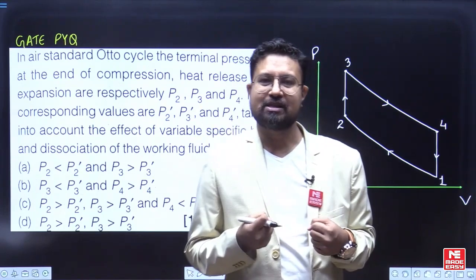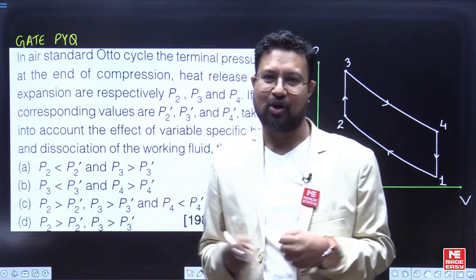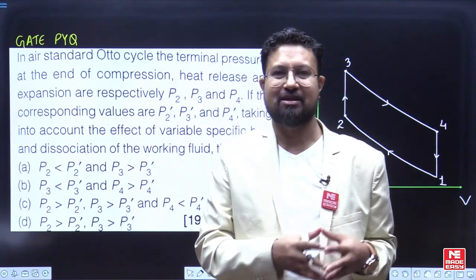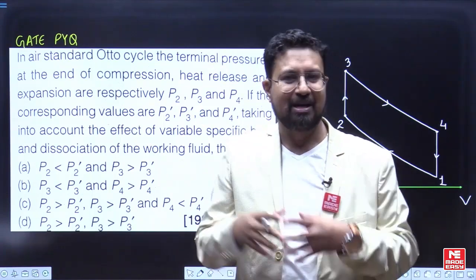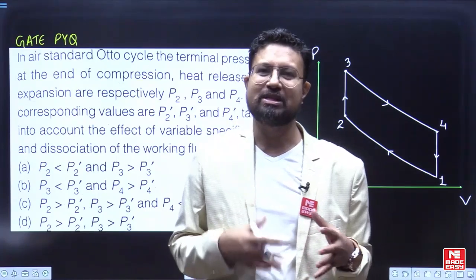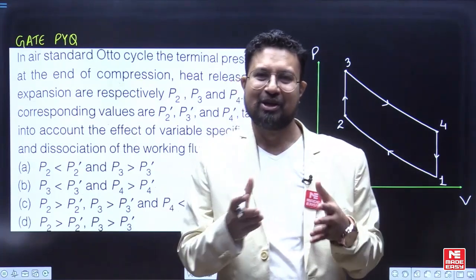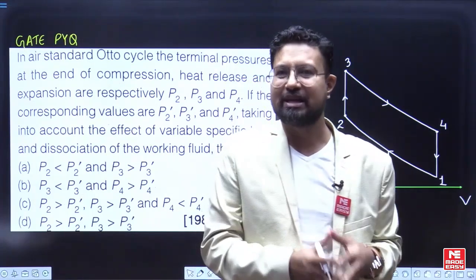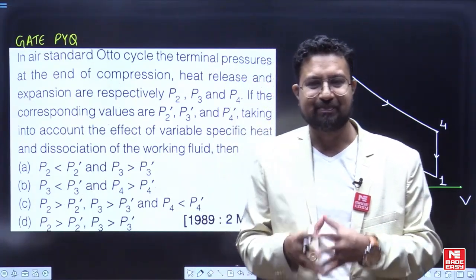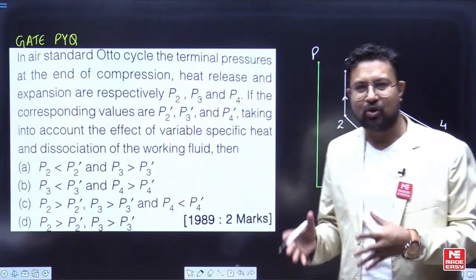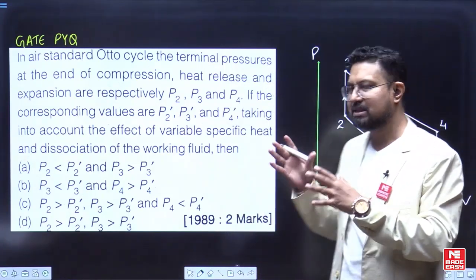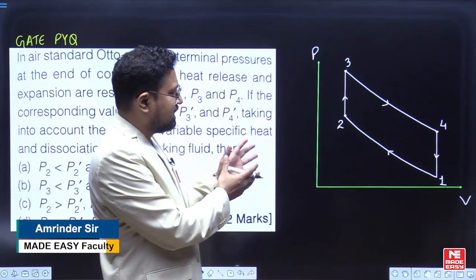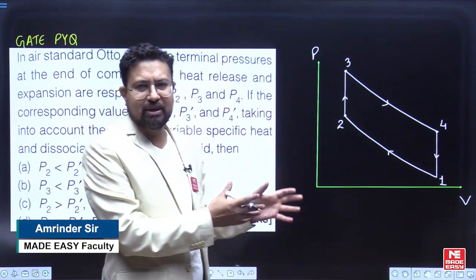Here we are going to discuss a previous year question from IC engines. This question is from 1989. I am discussing it because it attracts a lot of doubts. This question is about the standard Otto cycle, represented here as 1-2-3-4-1.